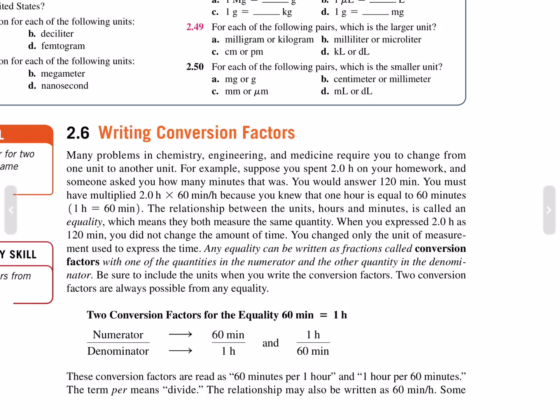Two conversion factors for the equality 60 minutes equals one hour: 60 minutes over one hour, or one hour over 60 minutes. These read as 60 minutes per one hour or one hour per 60 minutes. The term 'per' means divide. The relationship may also be written as 60 minutes per hour.